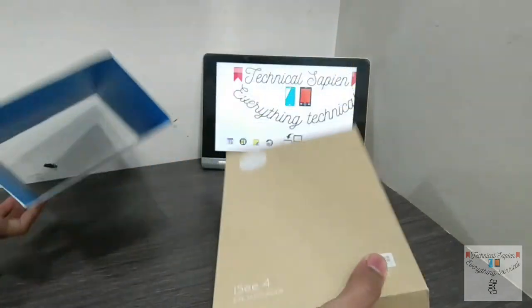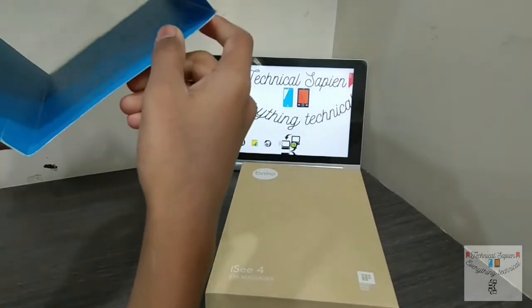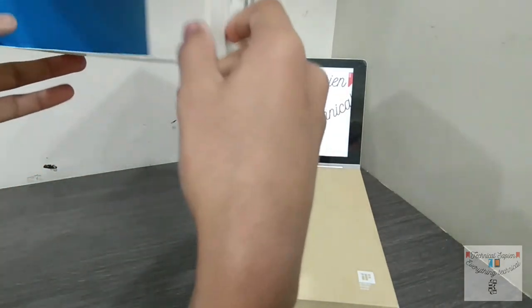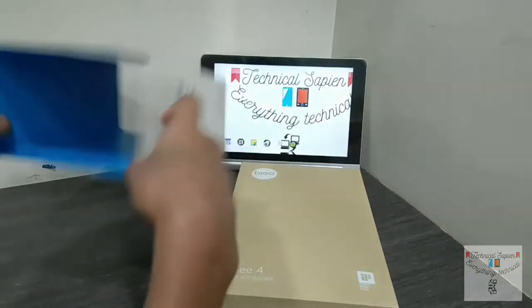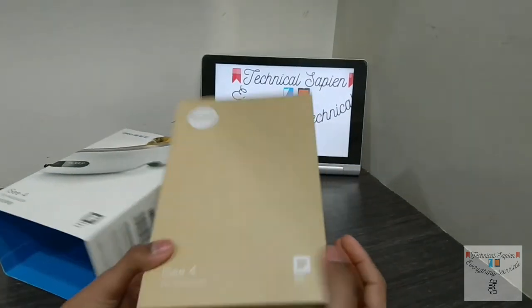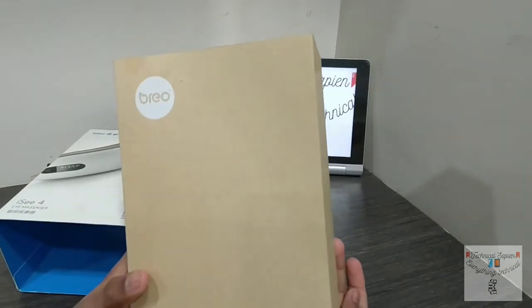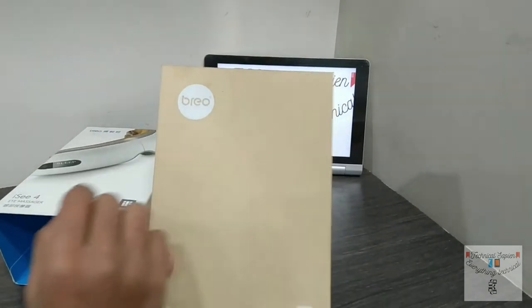It slides out and here we are having another box, nice blue color inside. That's kind of high quality packaging. Now let's just see the box. It's a normal box with Brio branding right here.